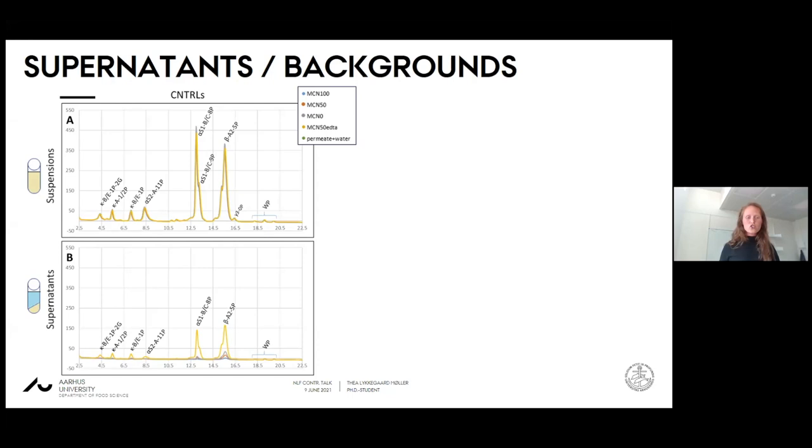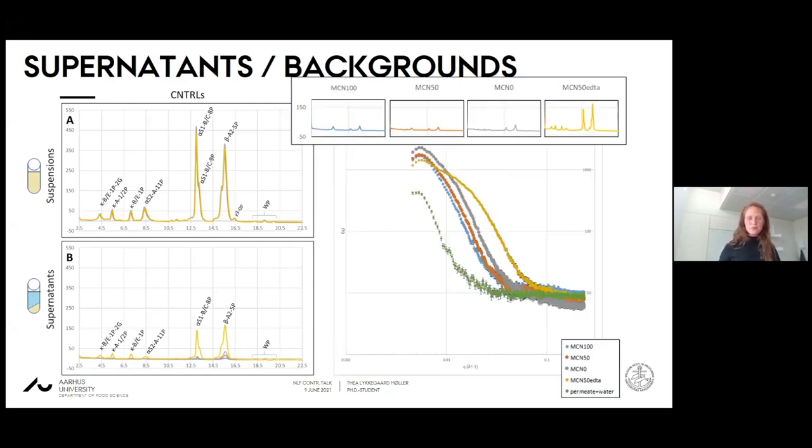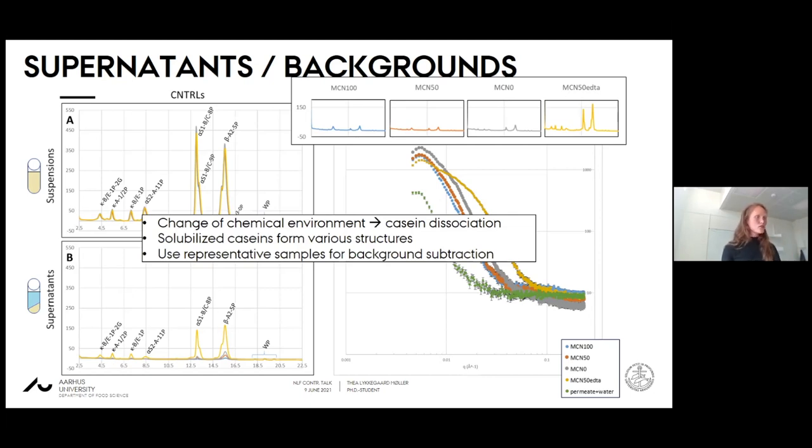We looked at what structures we could observe with small angle x-ray scattering in the soluble phase. With increasing amounts of casein soluble in the soluble phase, they make different structures. They have different scattering profiles, meaning they actually form some kind of structures. This highlights why it's so crucial to use the right kind of sample for background subtractions when looking at the structures that you actually want to see. We use these samples for background subtraction when looking at our actual micelles.